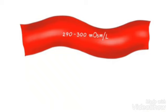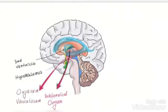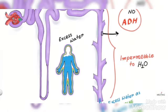Blood has an osmolarity of 290 to 300 milliosmoles per liter. Whenever this osmotic potential goes up or down, it is detected by osmoreceptors present in our brain. In the 3rd ventricle of our brain there are two structures — organum vasculosum and subfornical organ — these are the osmoreceptors and they detect the osmolarity of the fluids. They can detect this because there is no blood-brain barrier there. So whenever blood pressure falls or dehydration occurs, they check the osmolarity and know immediately, then send signals to the hypothalamus for the production of ADH.